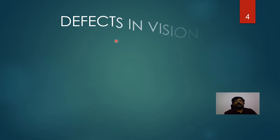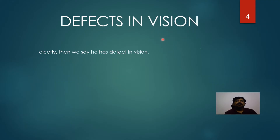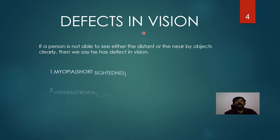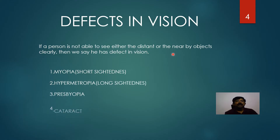In the case of a healthy person, they can see nearby objects and far objects clearly. If a person is not able to see nearby or far objects, then we say that the person has a defect in vision. The commonly known eye defects are: myopia, also known as short sightedness; hypermetropia, or long sightedness; presbyopia; and cataract.